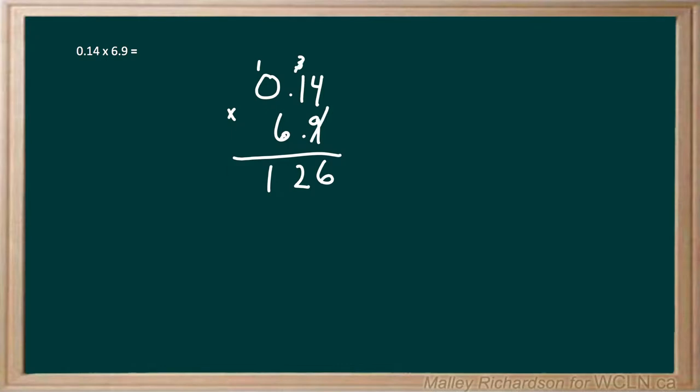Now we're done with this 9, and we're gonna move on to the 6. But because we're moving on to our next digit, we can either leave a space right below here or we can just draw a 0, whatever way works for you.